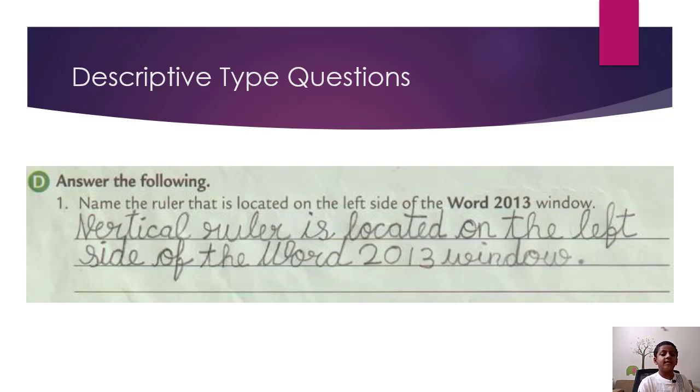Descriptive type questions. D. Answer the following. First, name the ruler that is located on the left side of the Word 2013 window. So the answer is vertical ruler is located on the left side of the Word 2013 window.